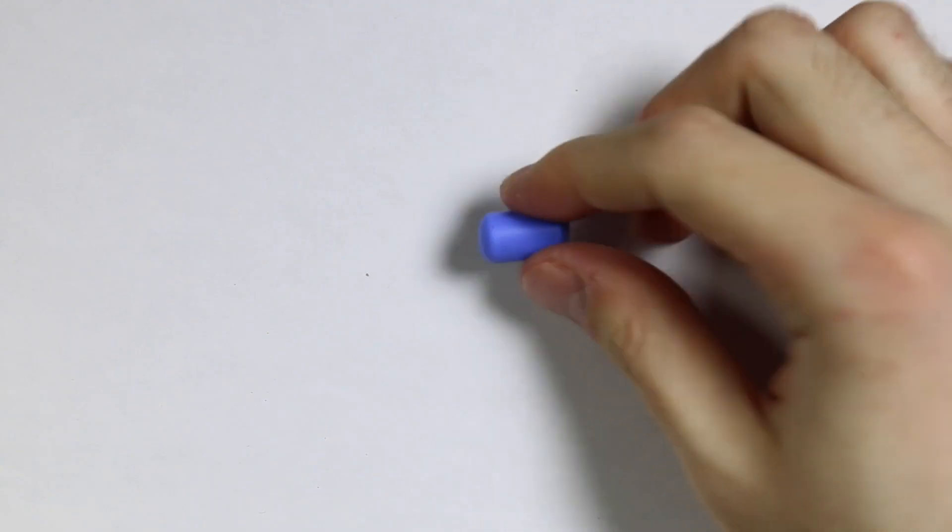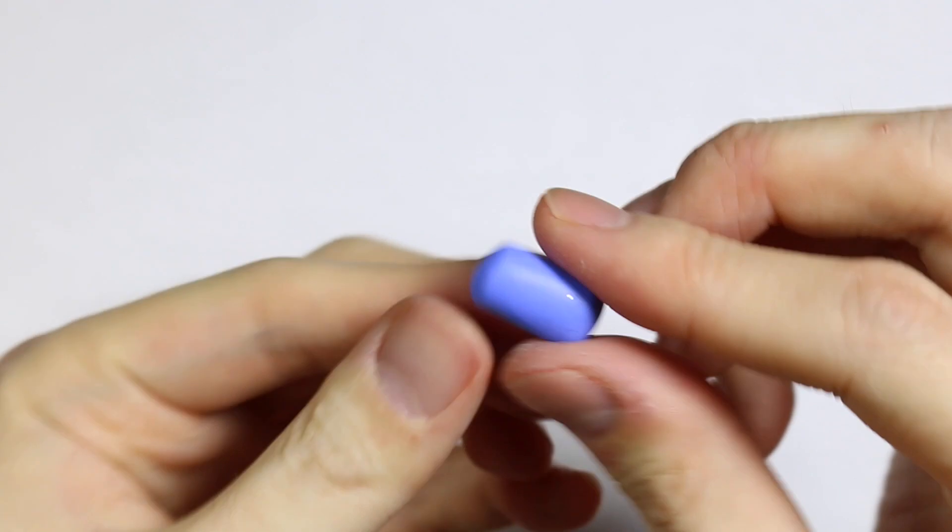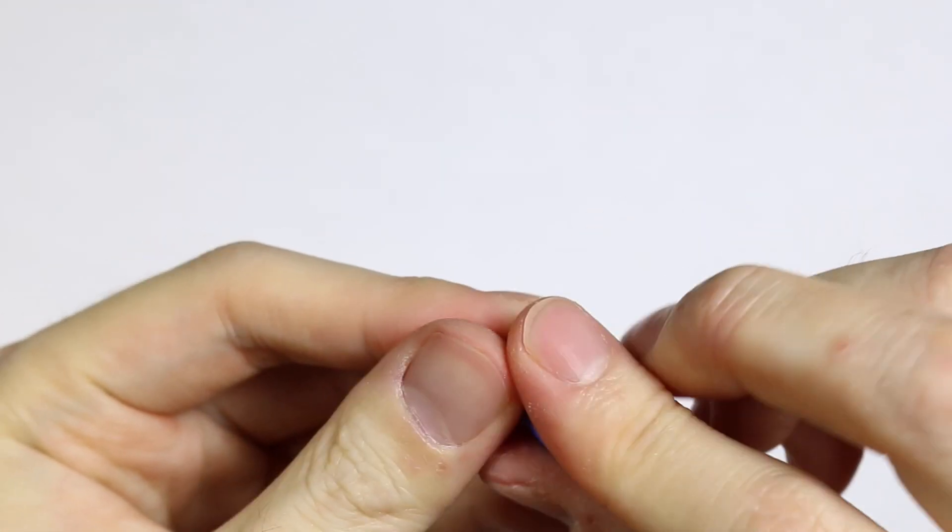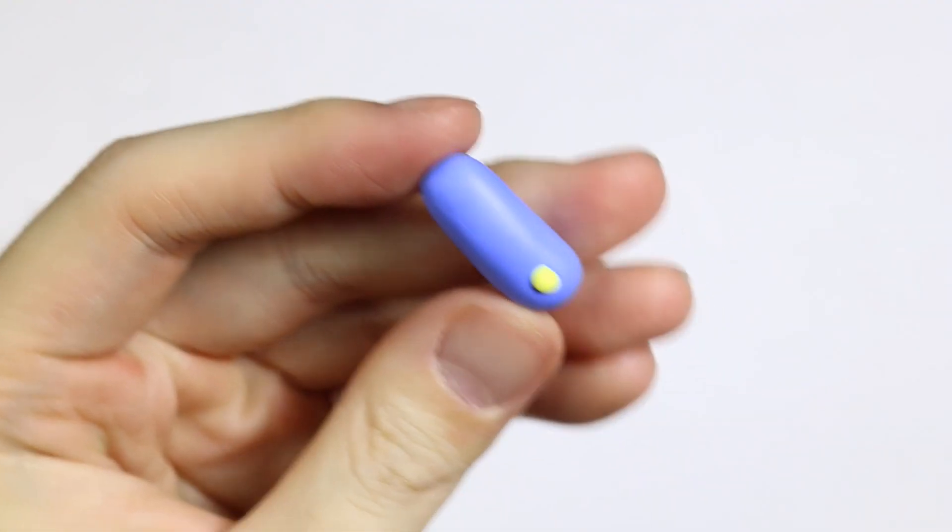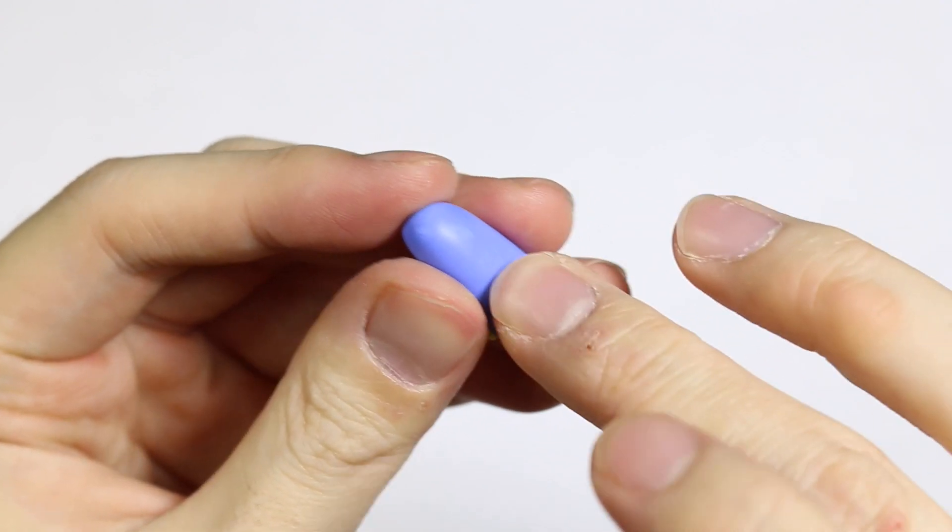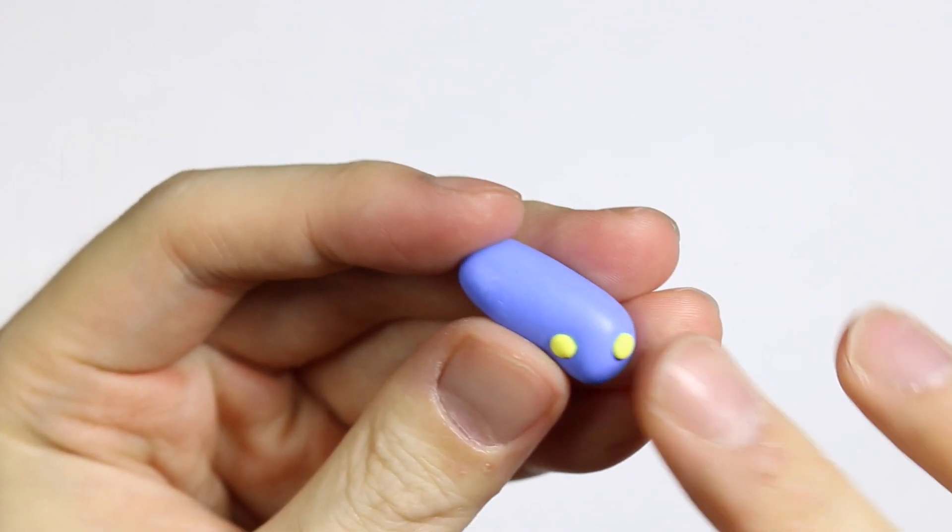So then for the body, I'm taking some blue clay and rolling into a fat cylinder. And on the fat cylinder, I'm adding little dots of yellow clay all over one end of the cylinder.